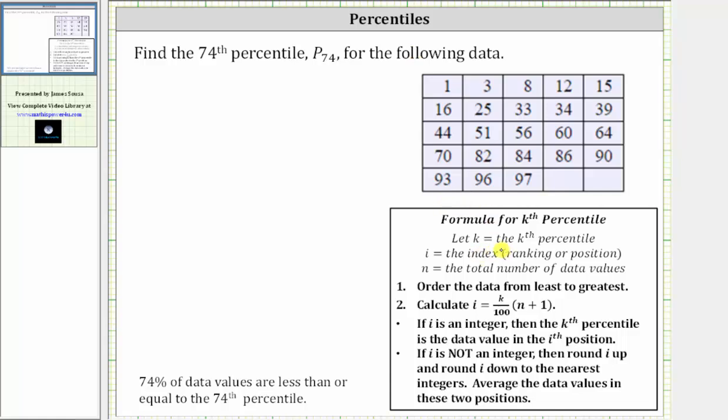We let k equal the kth percentile, which in our case, because we are looking for the 74th percentile, k equals 74.